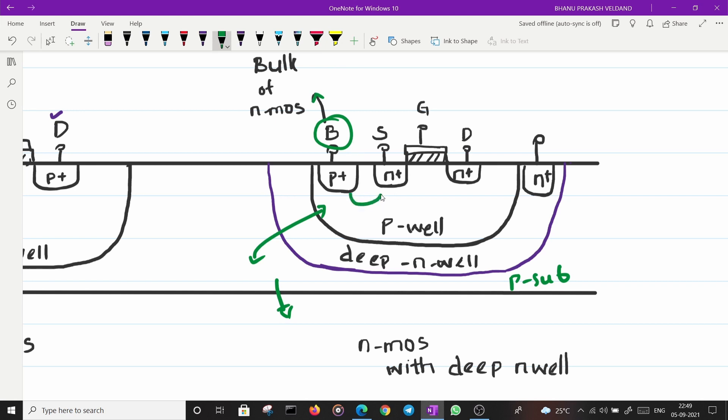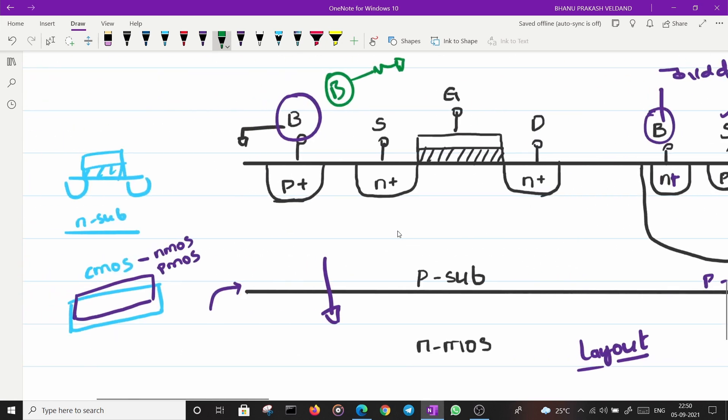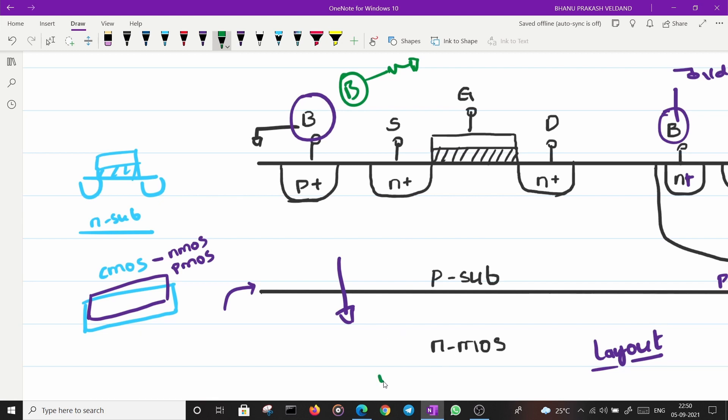As we discussed we don't want any current to flow here or here. So NMOS with deep N-well. People can call this as NMOS with deep N-well. This is the logic behind all the terminals of the MOSFET.